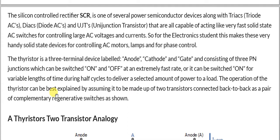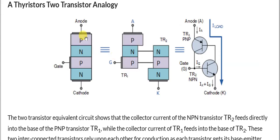The operation of the thyristor can be best explained by assuming it is made of two transistors connected back to back as a pair of complementary regenerative switches. Looking at the P-N-P-N thyristor with three terminals: internally it has two transistors — one is a PNP transistor (TR1) and the other is an NPN transistor (TR2) — of opposite polarities, fabricated inside the device.